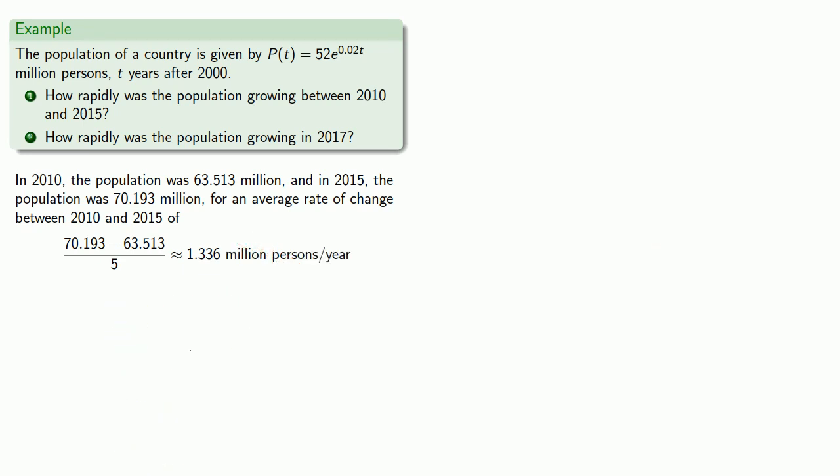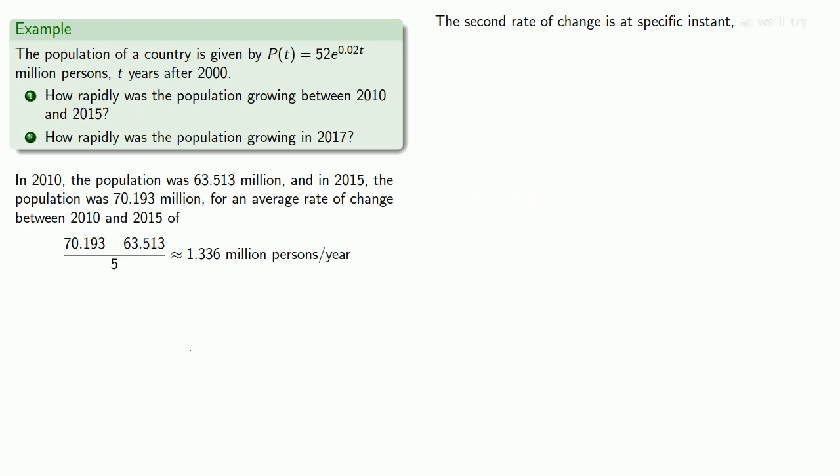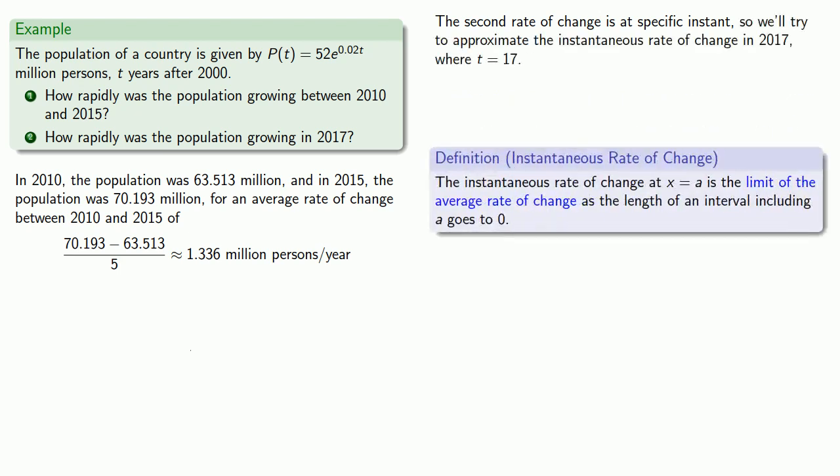Now can we determine how rapidly the population was growing in 2017? The second rate of change is at a specific instant, 2017. This means we're looking at an instantaneous rate of change in 2017 where t equals 17. Remember, the instantaneous rate of change is the limit of the average rate of change as the length of the interval goes to zero.